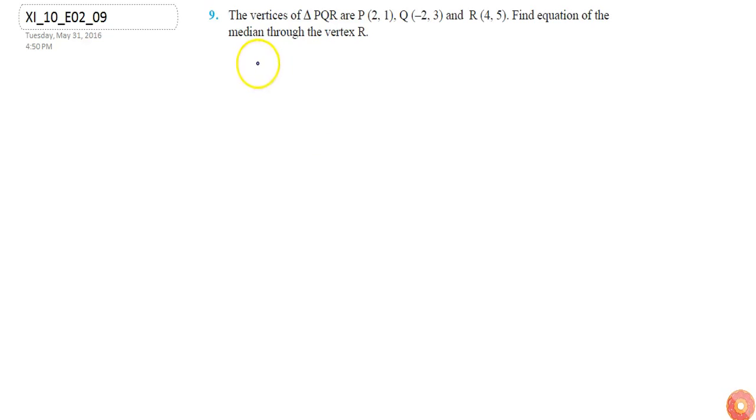In the question, first let's draw the triangle PQR. So let's say it is P(2,1), Q(-2,0), and R(4,5). Now we need to find out the equation of the median through vertex R.